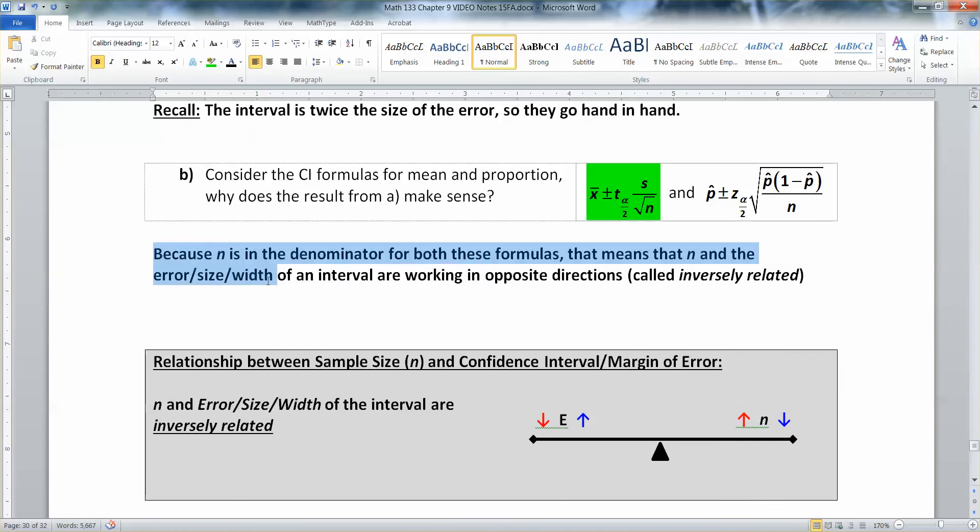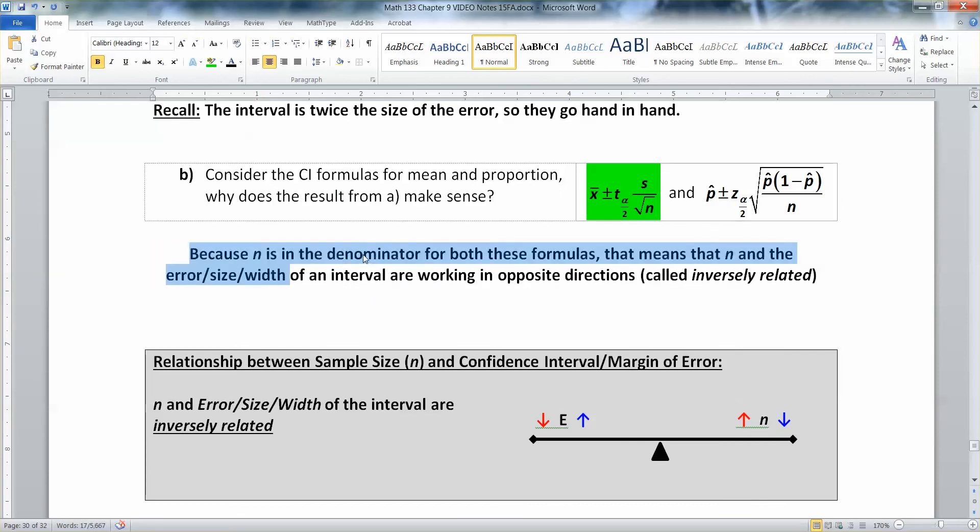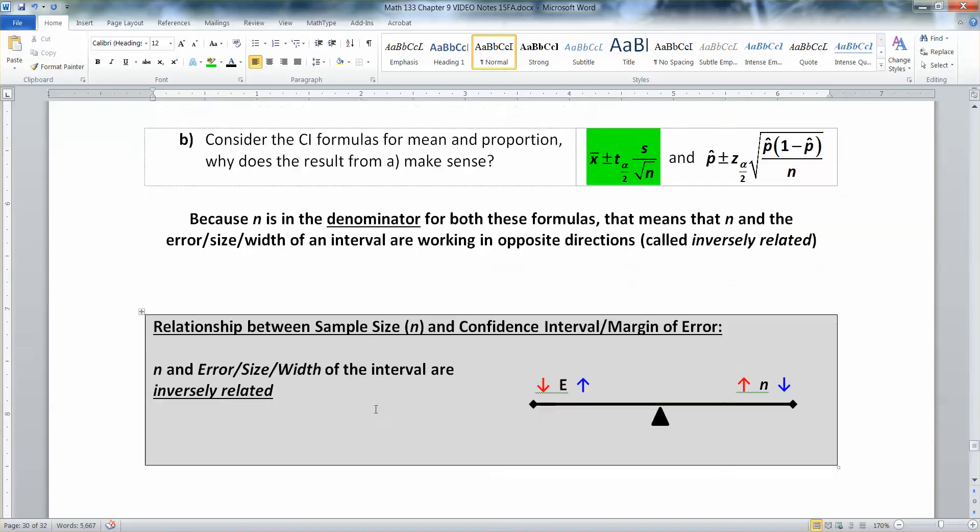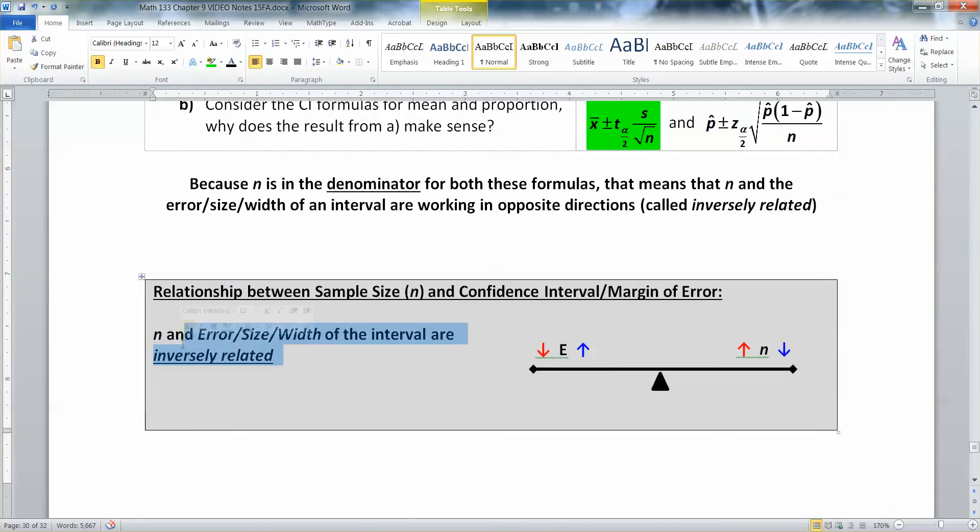Okay. So like I just said, because n is in the denominator for both of these formulas, that means that n and the error size width of these intervals are working in opposite directions. And that's called inversely related. So, and I wrote that down here, right here. Right? Now, what does it mean to be inversely related?